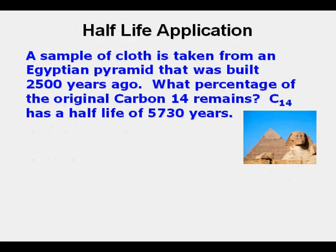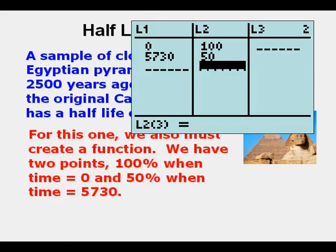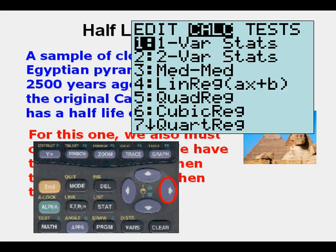Another application: Half-Life. A sample of cloth is taken from an Egyptian pyramid built 2,500 years ago — what percentage of the original carbon-14 remains? Carbon-14 has a half-life of 5,730 years. In Stat Edit, at time 0 there was 100% carbon-14 remaining, and after 5,730 years, 50% remains. Those two points form the basis for our exponential relationship, and we determine the function by going to StatCalc0.